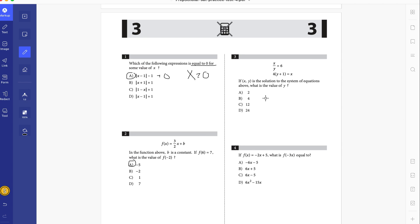If x, y is solution to the system of equations above, what is the value of y? For this one, there's multiple ways you can do it. You can try to solve manually. You can do x over y equals 6, 4 times y plus 1 equals x. What we're going to do is multiply both sides by y. So we have x equals 6y. Then we have 4y plus 4 is equal to 6y. Subtract the 4y from both sides and we get 4 is equal to 2y. So y equals 2. Again, pretty simple.